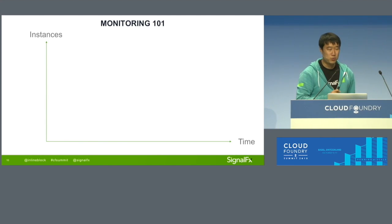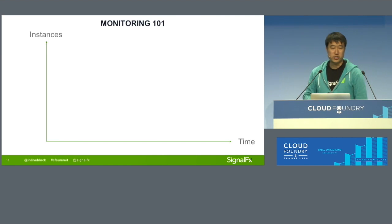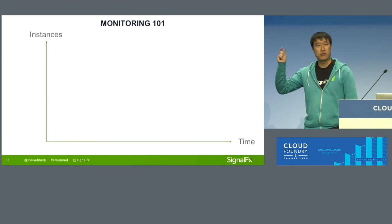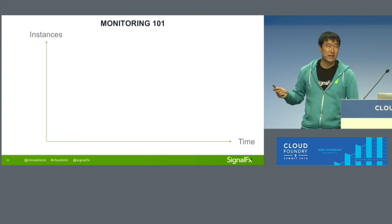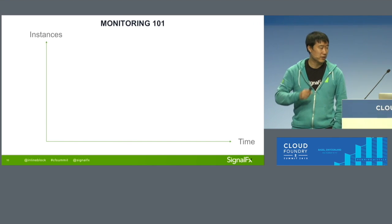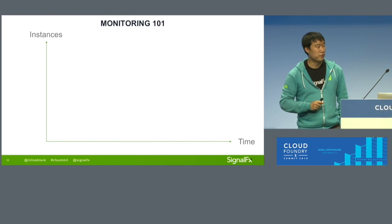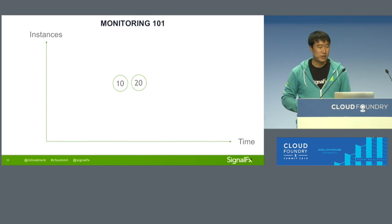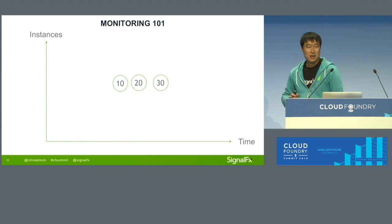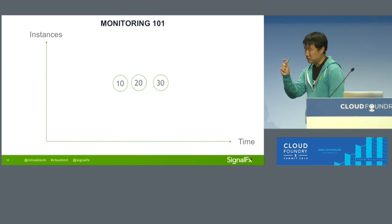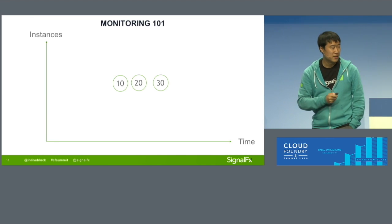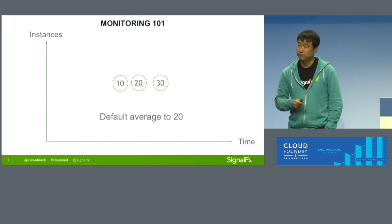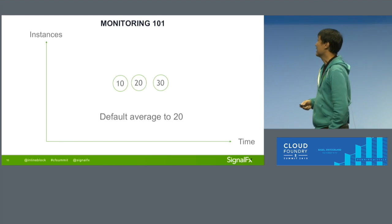The same thing happens horizontally over time. If you zoom out very far and look at the day overall, each data point might become a five-minute interval. If you have 10, 20, and 30 in the same small period of time — a matter of seconds — then you roll up those data points into an average of 20 in the same way.